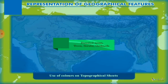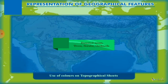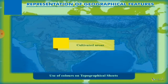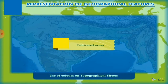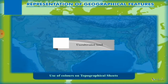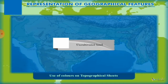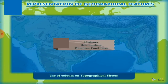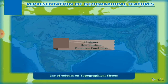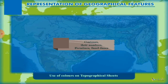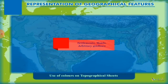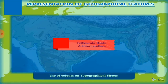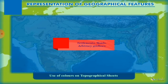Green color is used for forested areas, trees, scrubs, and orchards. The next cultivated area is highlighted in yellow color. The area with white color shows uncultivated land. Brown color is used to show contour lines, their numbers, sand dunes, etc. Red color is used to show settlements, roads, and arbitrary grid lines.